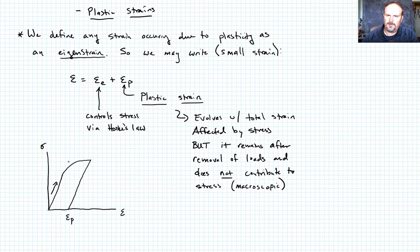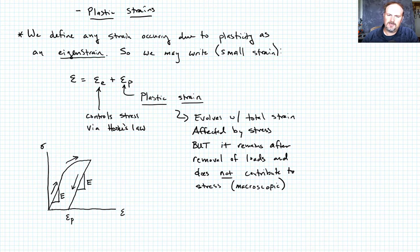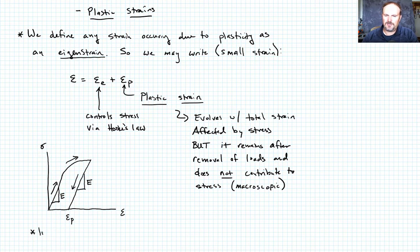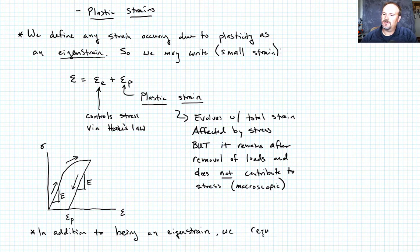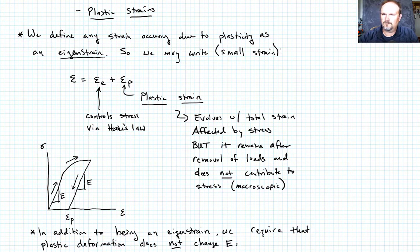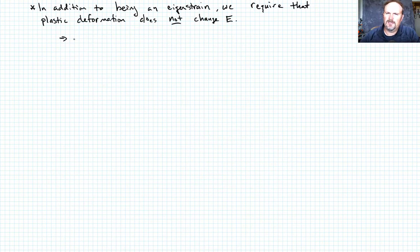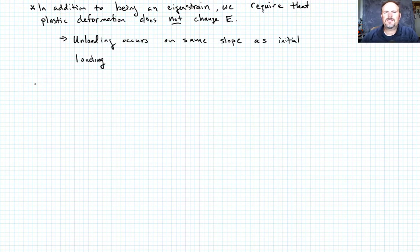A couple of things to note about the loading and unloading curve. Something we're going to require for the plasticity we discuss is that the initial loading modulus — the Young's modulus — and the unloading modulus are the same, namely Young's modulus. So in addition to being an eigenstrain, we require that plastic deformation not alter the Young's modulus E, meaning unloading occurs on the same slope as initial loading.